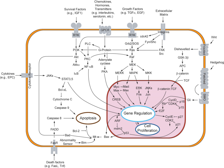Cell signaling can be classified as mechanical and biochemical based on the type of the signal. Mechanical signals are the forces exerted on the cell and the forces produced by the cell; these forces can both be sensed and responded to by the cells. Biochemical signals are biochemical molecules such as proteins, lipids, ions, and gases. These signals can be categorized based on the distance between signaling and responder cells. Signaling within, between, and amongst cells is subdivided into the following classifications.